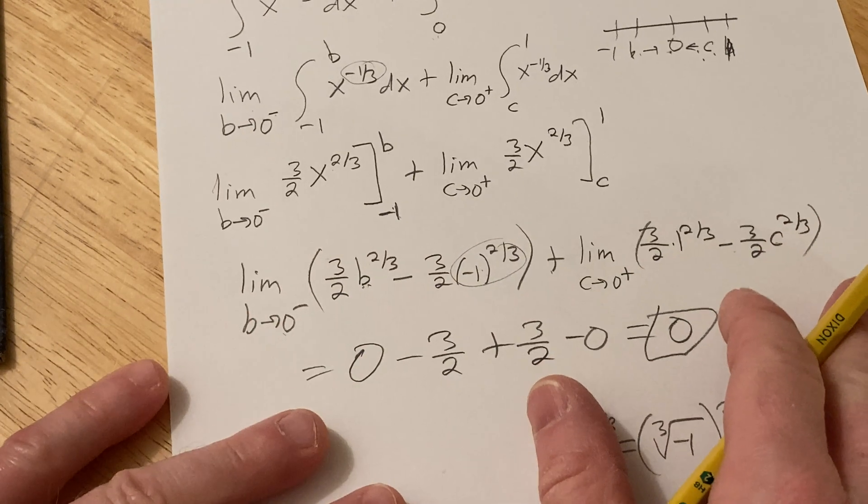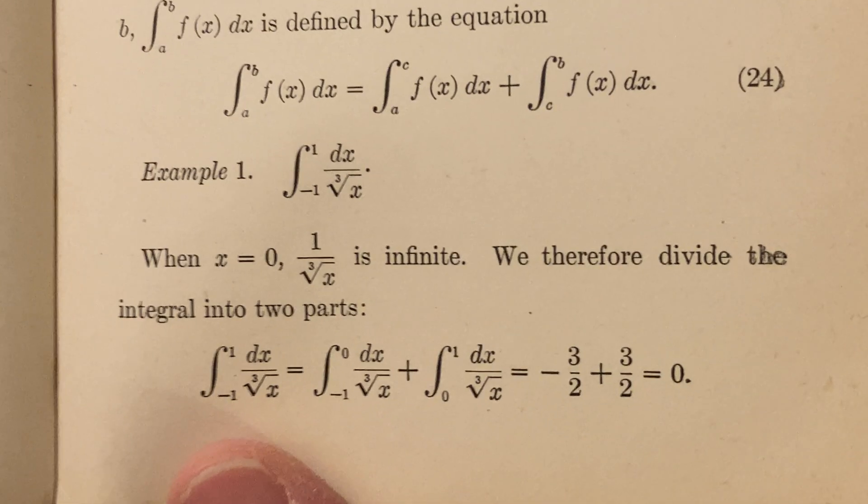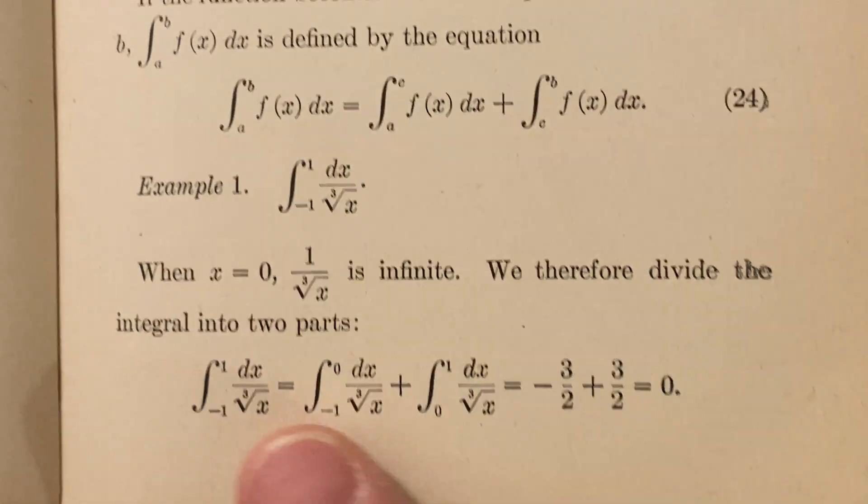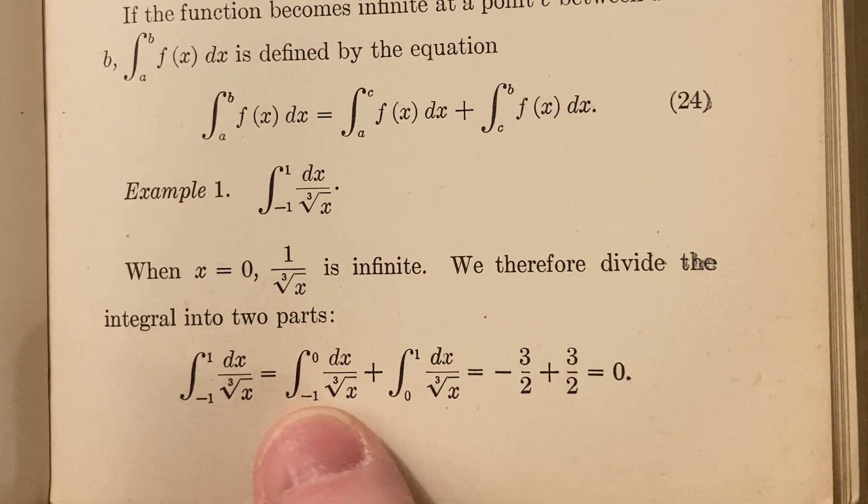Now the moment of truth, I'm going to show you the answer by Phillips. When x equals zero, the integrand is infinite, we therefore divide the integral into two parts, which is what I did.